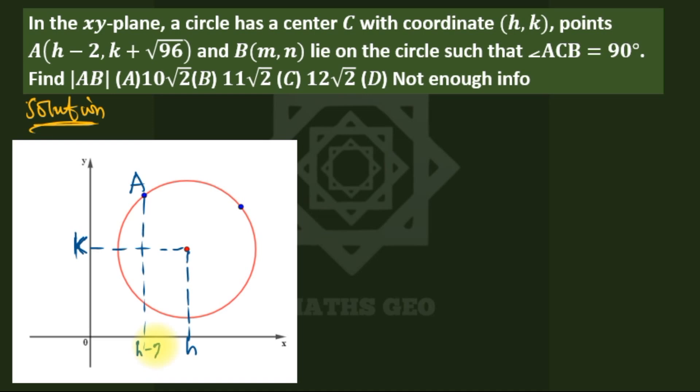As you move back it decreases. The y-coordinate will be up because it's k plus √96. And B, though we don't need it, they didn't give us any value so we don't need the coordinates. And they say that angle ACB is 90°.